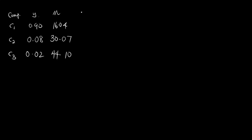Now we calculate the square root of the molecular weight for each component. The square root of 16.04 gives us 4.005. The square root of 30.07 gives us 5.48. The square root of 44.10 gives us 6.64.